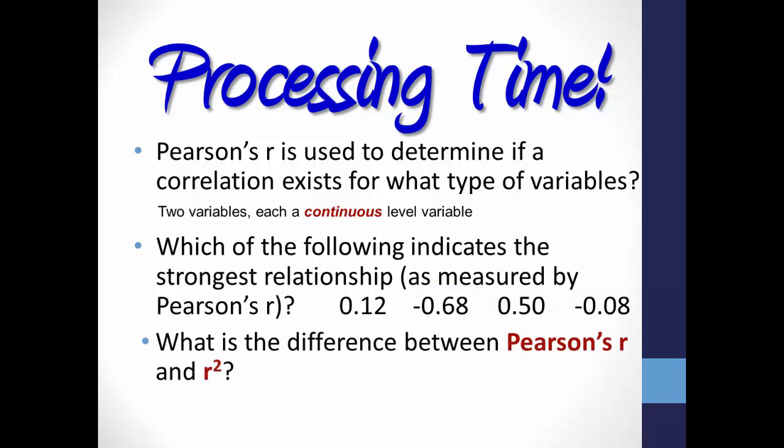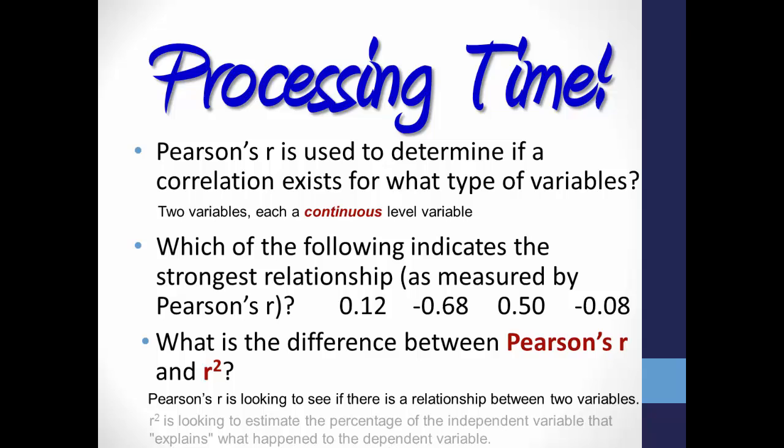What is the difference between Pearson's R and R-squared? Pearson's R is looking to determine if a relationship exists between two variables, and if so, what type of relationship, positive or negative. On the other hand, R-squared is used for regression analysis. It is the Pearson's R statistic squared, used to estimate how much the independent variable explains what happened to the dependent variable.